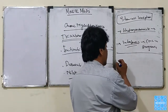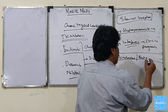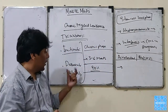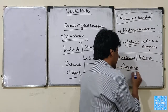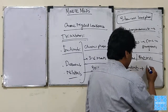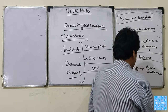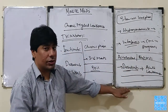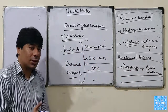If the patient progresses to the accelerated phase or blast crisis, then we have to go for second-line TKIs like dasatinib. We don't start with imatinib directly. Plus, we treat it as acute leukemia — with radiotherapy and chemotherapy. This is how we treat and manage a case of chronic myeloid leukemia.